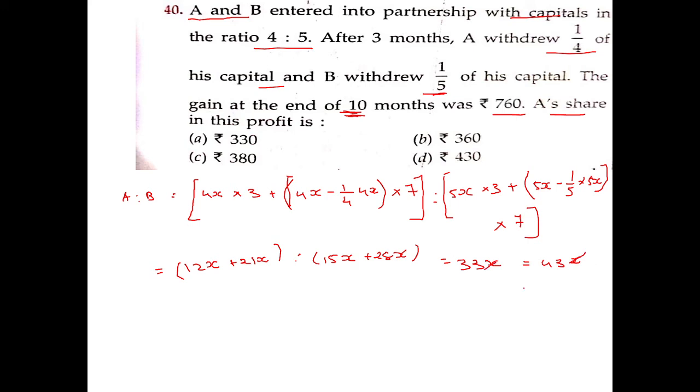So here we can cut x, so 33 is to 43 which is the profit of 760. Multiply to get 1 share and we get 333 as the correct answer, so option number A is the correct answer.